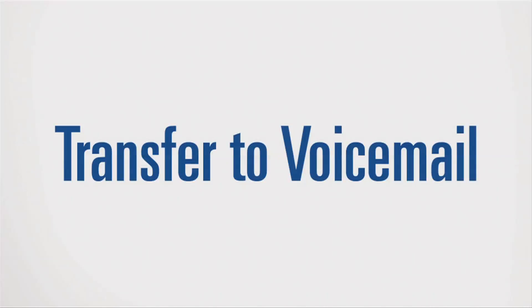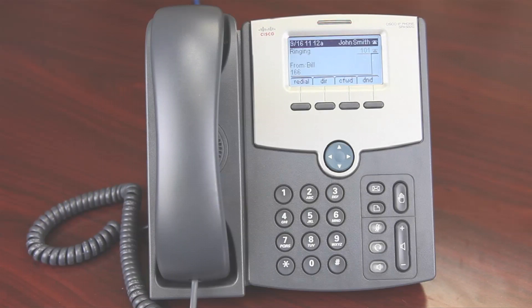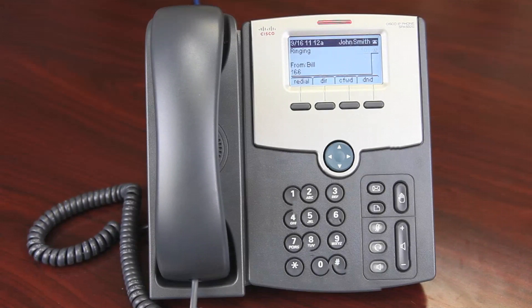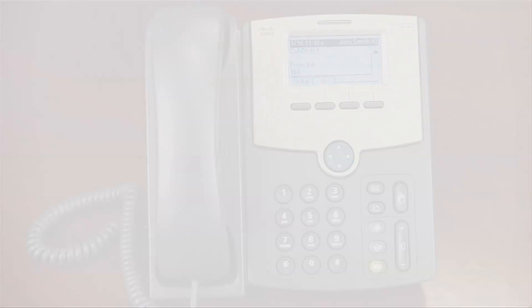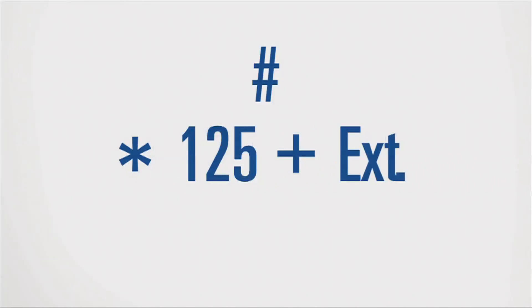You can also forward a call directly to another voicemail. While on the call, press the pound sign, then dial star 125, followed by the extension and the pound symbol again. This will forward the call directly to that extension's voicemail. To summarize, to forward directly to voicemail: press the pound sign, then star 125, followed by the extension number, and then the pound sign again.